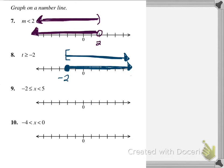Number 9 shows a compound inequality — we want everything between negative 2 and 5. Since it must be less than 5, we use an open circle at 5. Since it must be greater than or equal to negative 2, that endpoint gets a filled-in circle, and we shade in between. In bracket notation, we use a squared-off bracket at negative 2 and an open parenthesis at 5, shaded in between.